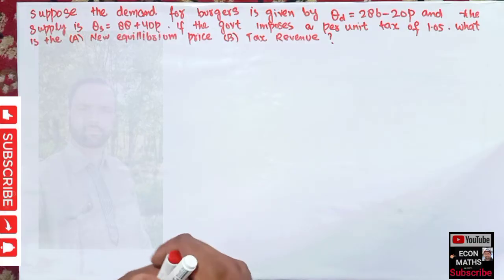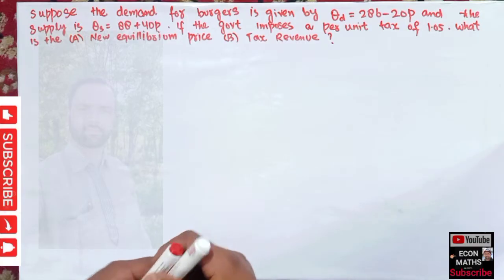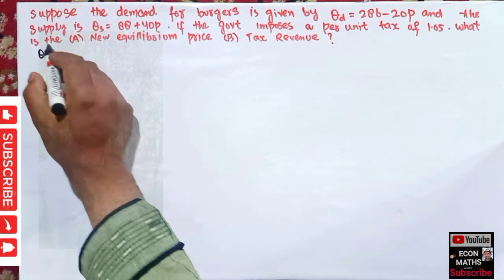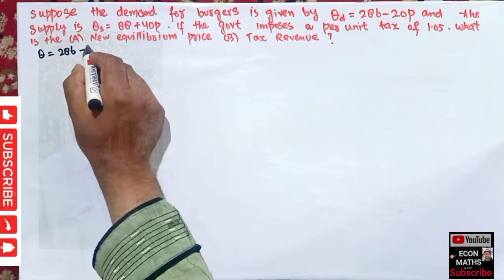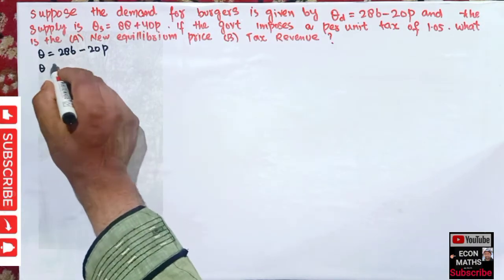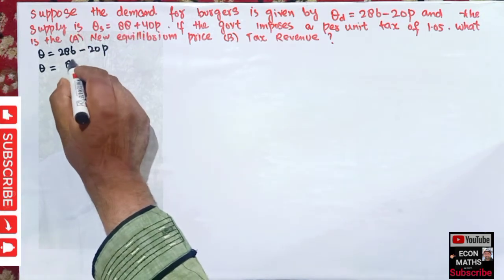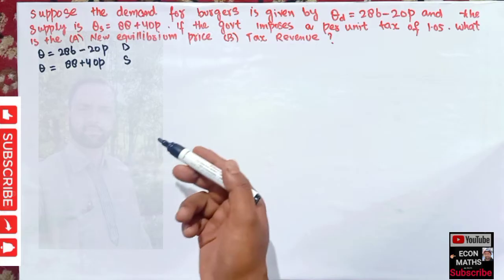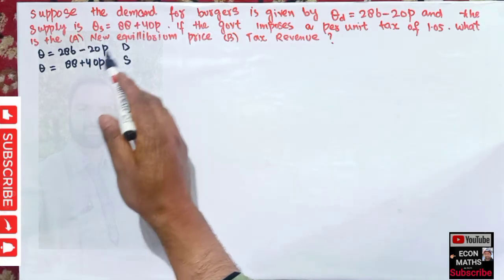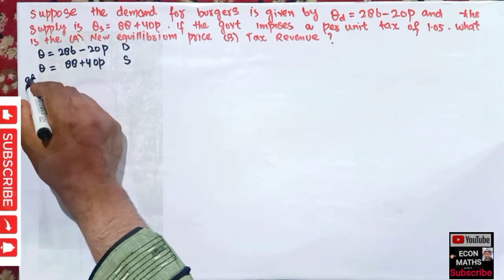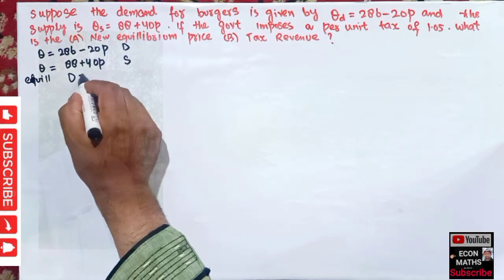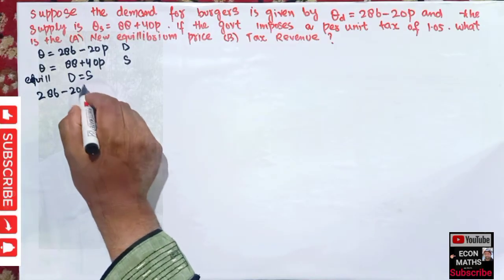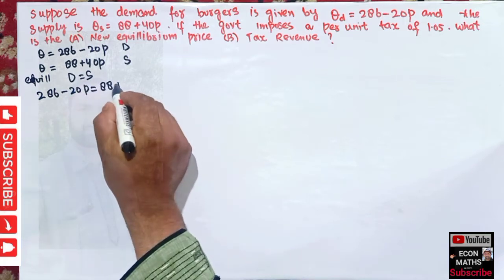To find the new equilibrium price and tax revenue, we will first find the old equilibrium price and quantity. The demand function is 286 − 20P and the supply function is 88 + 40P. We know equilibrium occurs at the intersection of demand and supply, so we equate demand with supply.